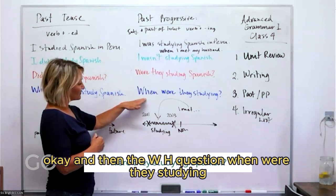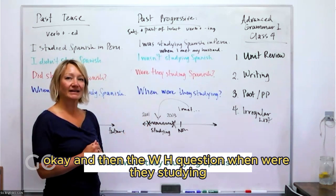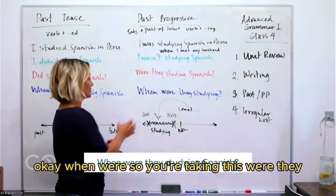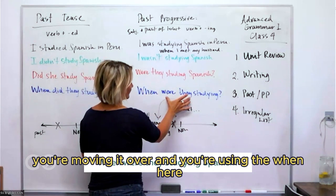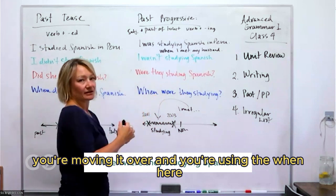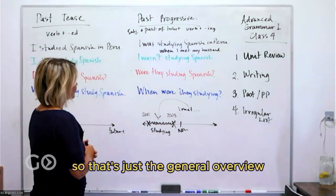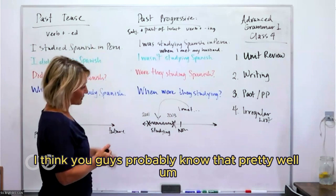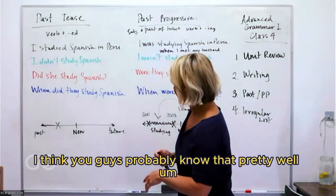For the WH-question in past progressive, take the question form and add the question word in front: 'When were they studying?' You move 'were they' and place 'when' before it. That's the general overview — you probably know this pretty well.